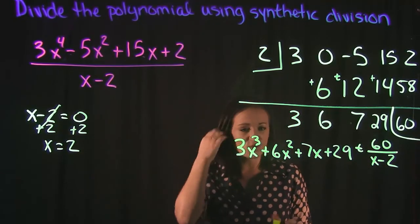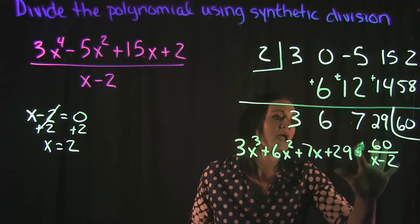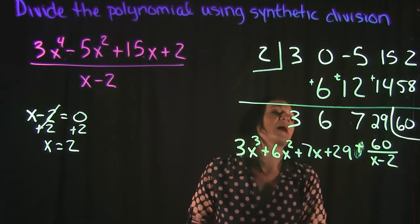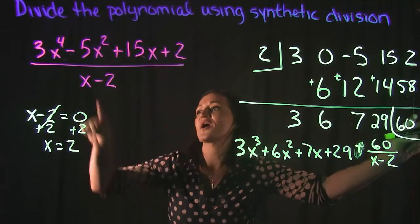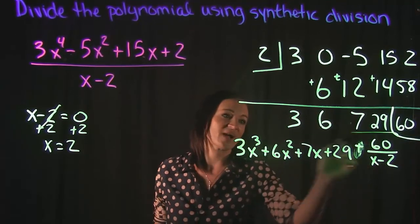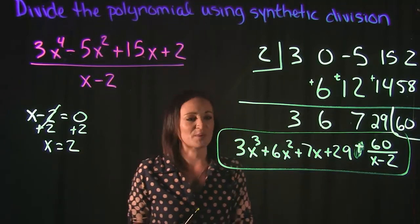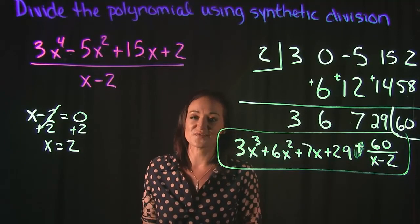So 3x cubed plus 6x squared plus 7x plus 29 plus our remainder of the 60 over the x minus 2 that we divided. So this is our answer for this problem here. That's it for this video.